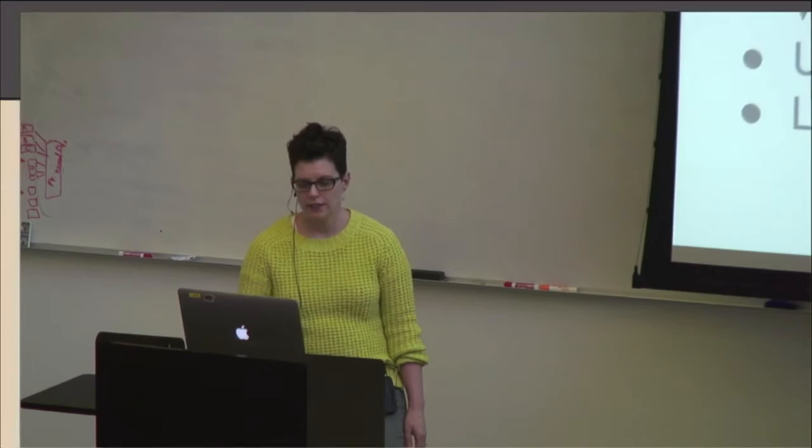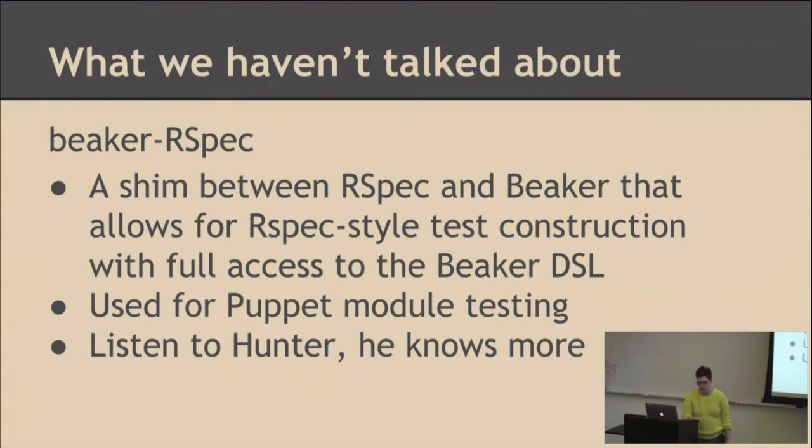I talked about this a little bit at the beginning. Hunter is going to be talking after me. So what I have not talked about is Beaker RSpec. Beaker RSpec came out of the desire from the Forge module community. They had been using various system testing tools that provided access to the RSpec testing language. They were very wary about switching over to Beaker because Beaker basically has no construction. You can do whatever the hell you want in Ruby, and then throw an assertion. That was not really a good solution for them. They wanted something that had a more controlled system, supported the RSpec language. And so what we did was we created this shim called Beaker RSpec. And what it does is it connects up the Beaker DSL to RSpec. As a bonus, it provides all of server spec. So Hunter is going to be talking about that.